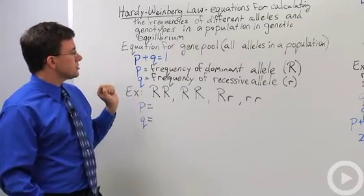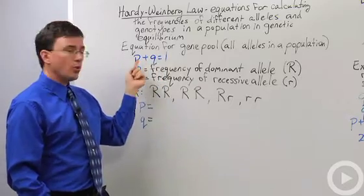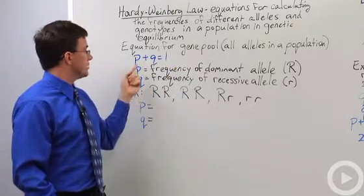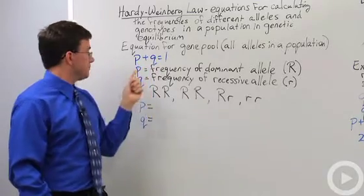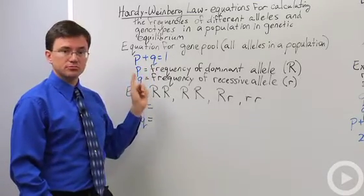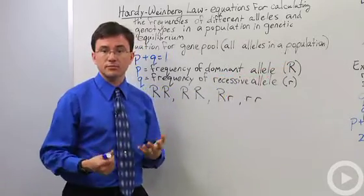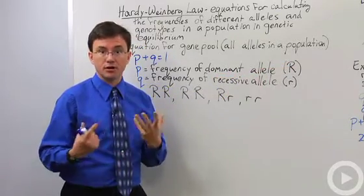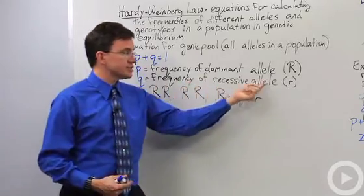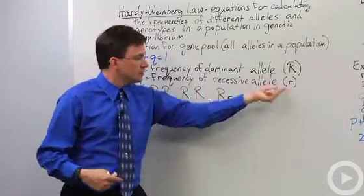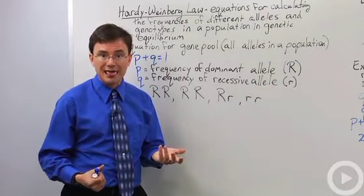For example, let's suppose we had this population here. Now the Hardy-Weinberg equation for describing that gene pool is P plus Q equals 1. Now P is a variable used to represent the frequency of the dominant allele. In this case, I'll be talking about the trait, big R for rolling your tongue. Q is the frequency of the recessive allele within that gene pool, little r in this case, or the inability to roll your tongue.